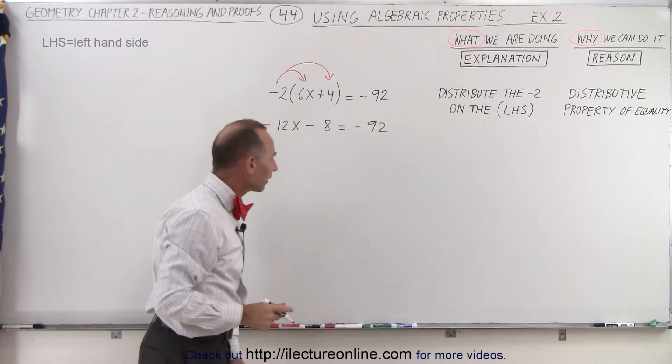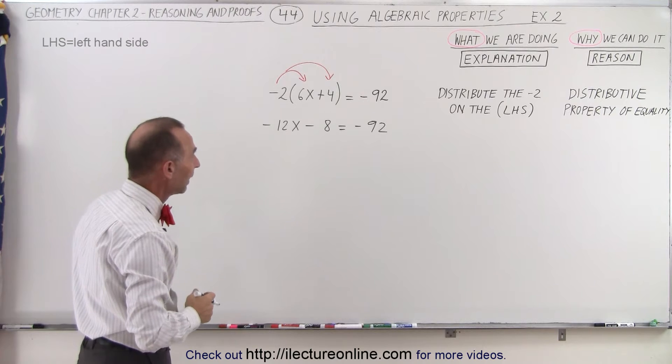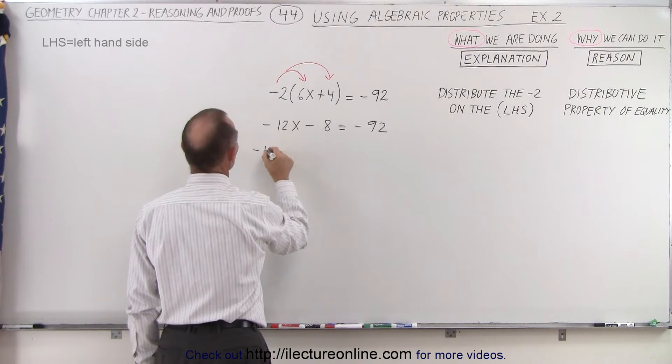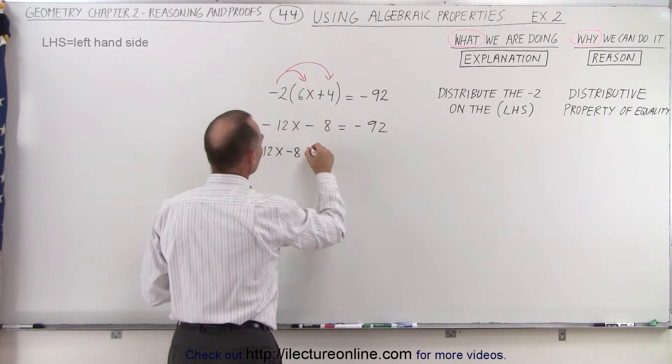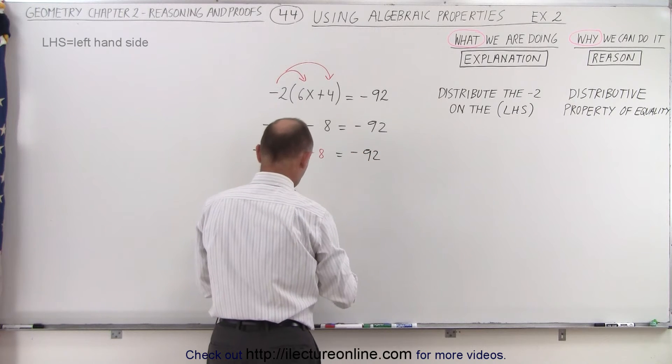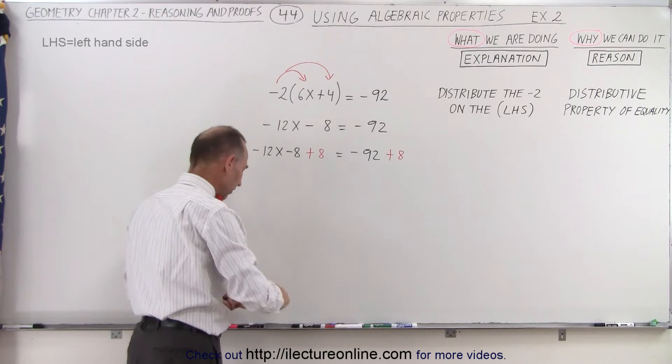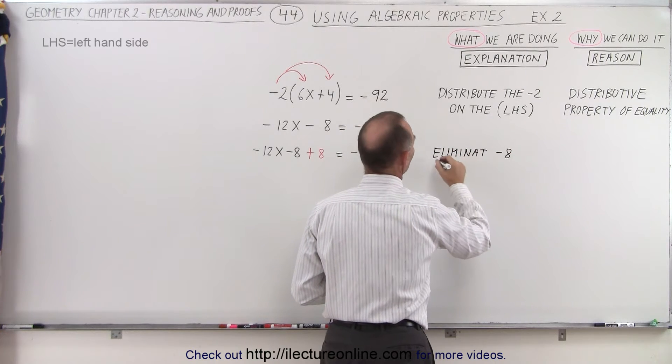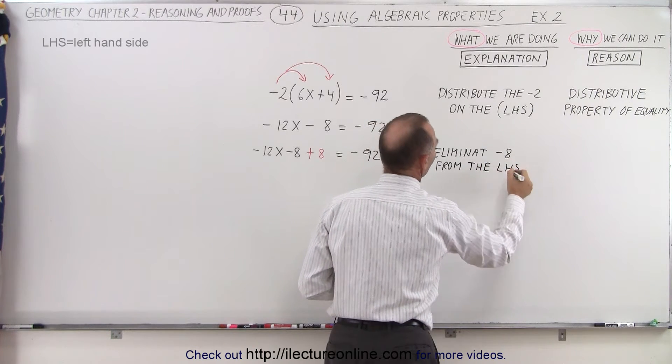Next, what I'm going to do now is get rid of the minus 8 on the left side. I can eliminate the minus 8 by adding a plus 8 to both sides. Minus 12x minus 8, and now I'll add an 8 to the left side. That should equal minus 92. If I do it to the left side, I must do exactly the same thing to the right side. So what I'm doing here is I'm eliminating the minus 8 from the left-hand side.